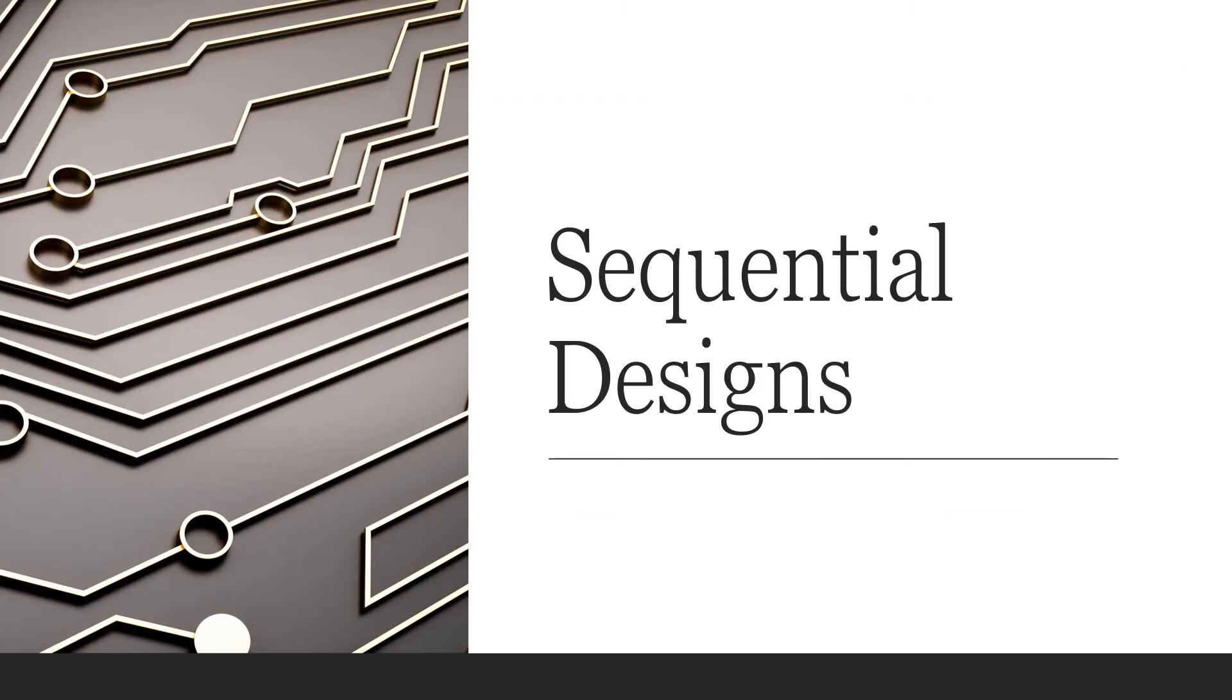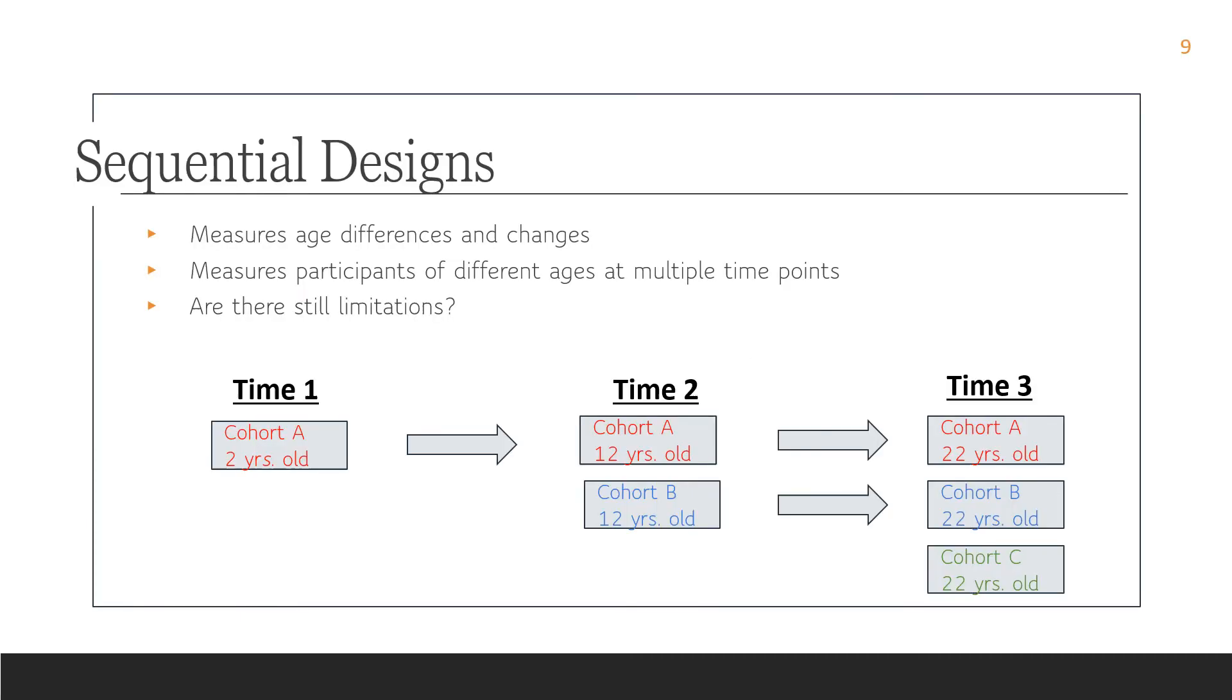So the other type of method that we're going to look at now, the third one, is what's called sequential design. And a sequential design, as you can see from this image, it's a combination of the longitudinal and cross-sectional approaches. So this design is going to measure age differences, but it's also going to measure age changes. So in this type of study, we have multiple age groups and multiple time points.